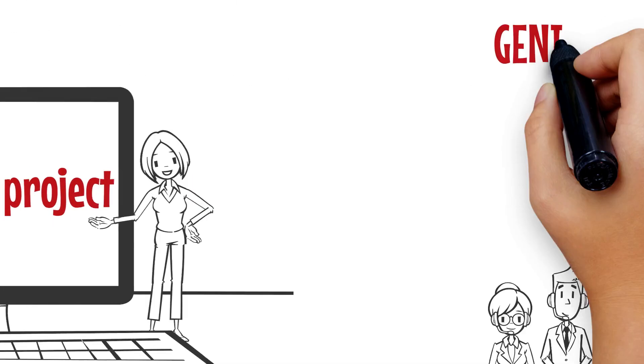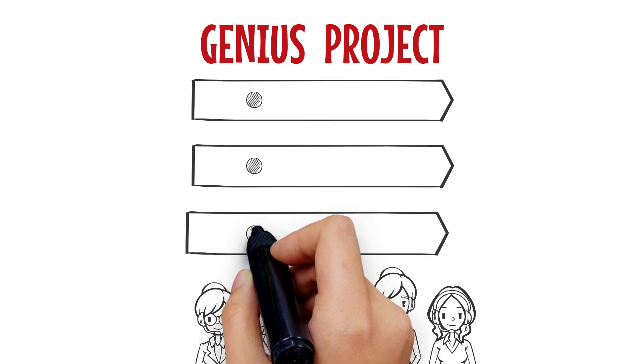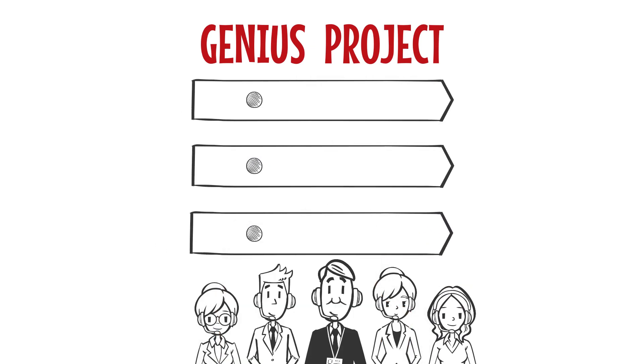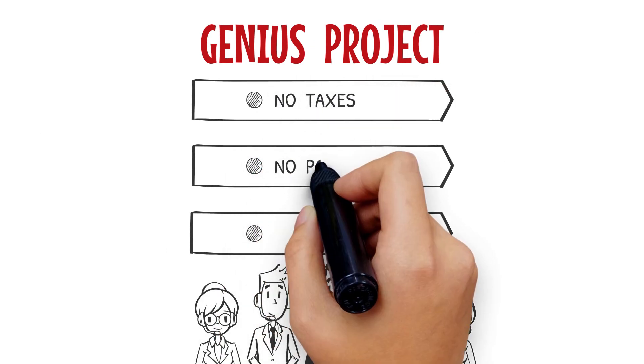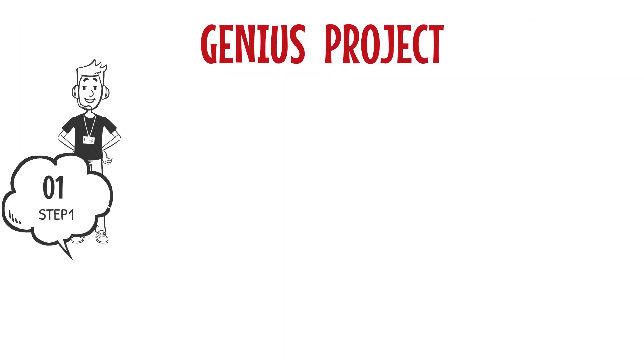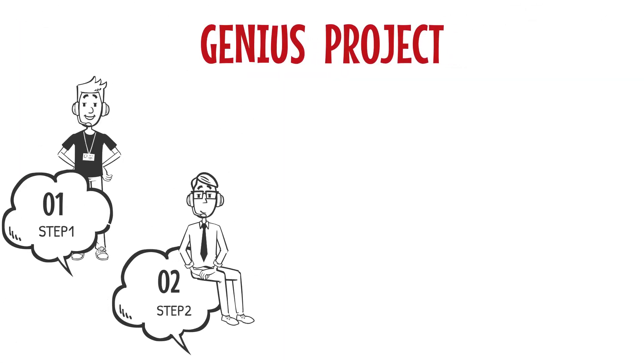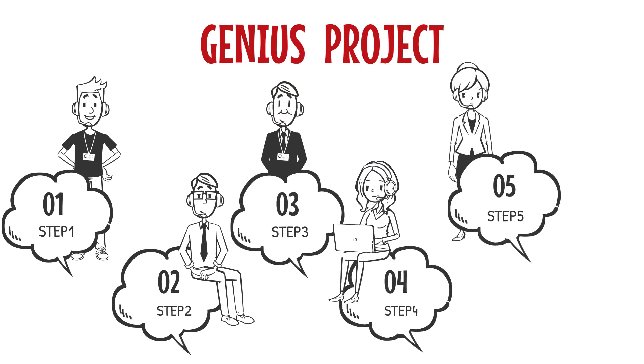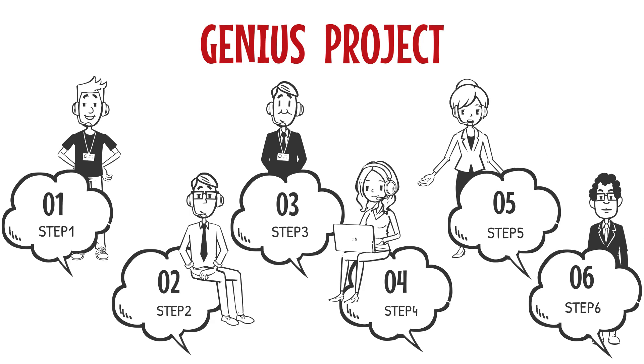This is the Genius Project. With one trillion yen, no, with the first 10 billion yen, we can make a world with no taxes, no poverty, and no wars. We will be establishing world peace in six distinct steps. So please keep watching until the end of the video.